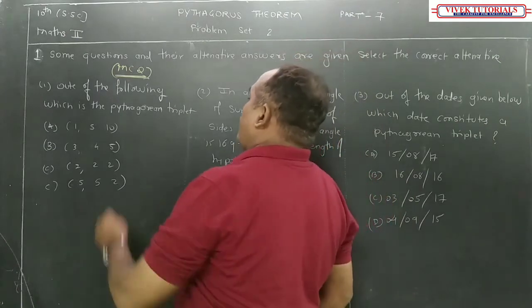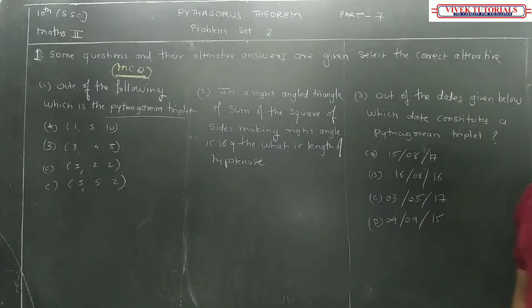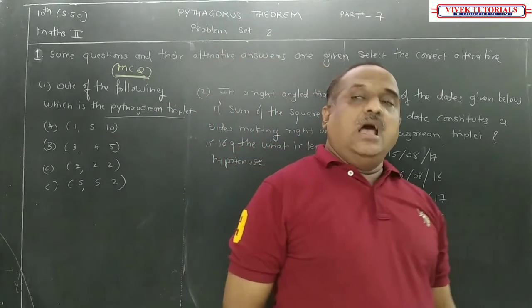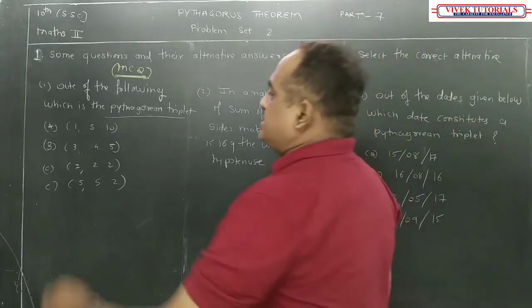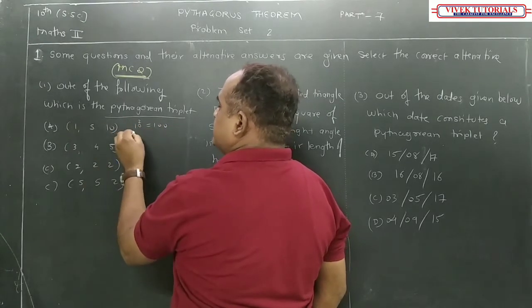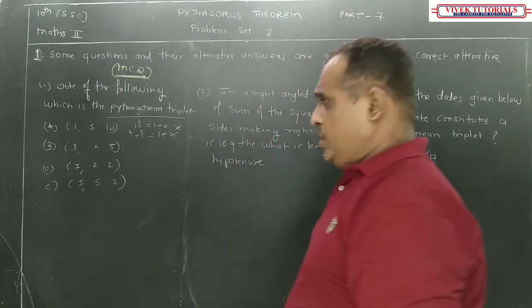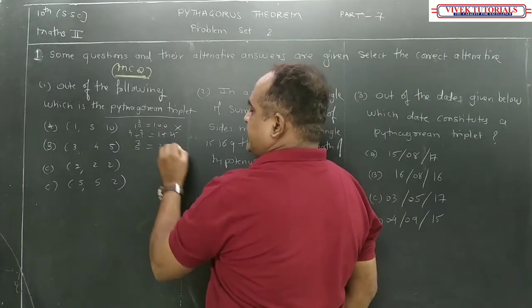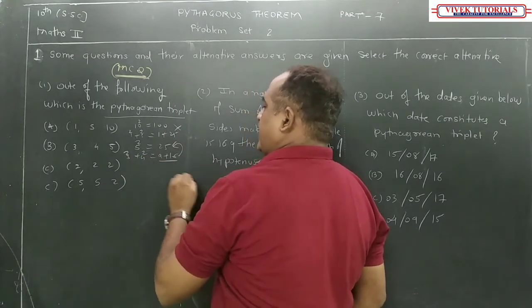Now, which of the following is a Pythagorean triplet? You should know what a Pythagorean triplet is. Pythagorean triplets are a group of 3 natural numbers in which the square of the larger number equals the sum of the squares of the other two. For example, 5 square is 25, and 3 square plus 4 square equals 9 plus 16, which is 25. So (3, 4, 5) is the answer.